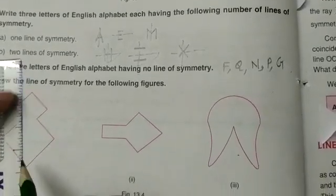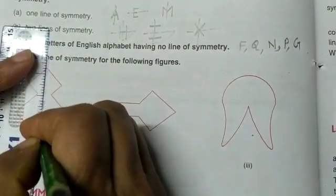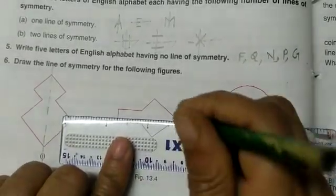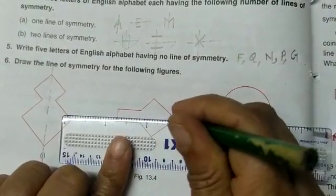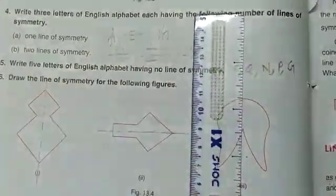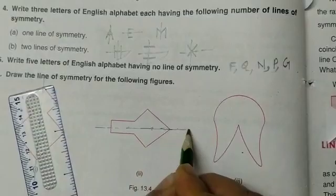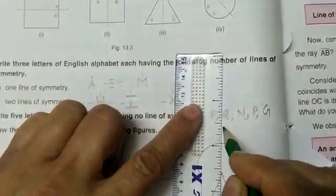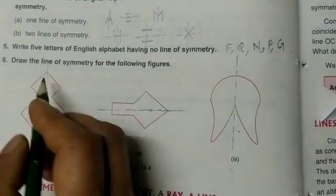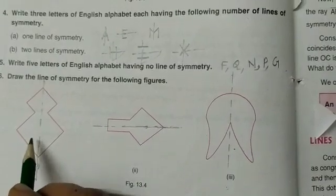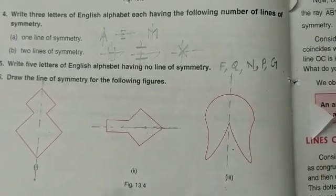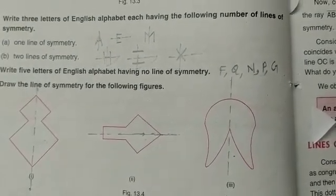Let's start question number six — line of symmetry. You can draw it like this, so this is the line of symmetry. Then in the second part, draw the line of symmetry like this. In the third part, draw the dotted line — this is the line of symmetry. So in this way you can draw your line of symmetry, meaning you have to divide the figure into equal halves. This is all about your worksheet 1 of symmetry. Next time we will discuss worksheet 2. Thank you and have a nice day.